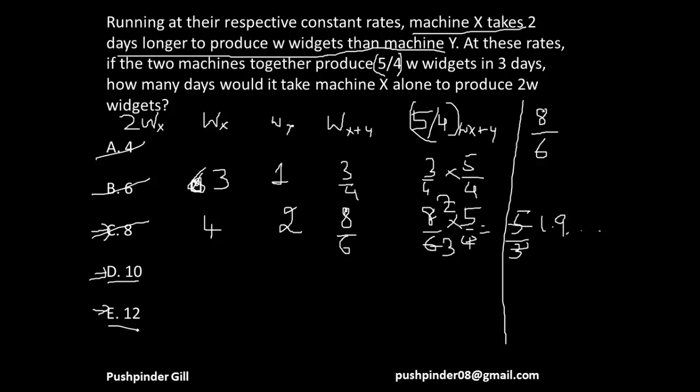So going with 12, to produce 2W widgets it takes 12 days. To produce half the units is gonna take 6 days. To produce W widgets, the Y machine is gonna take 2 days less, so 4 days. So together they're gonna take 24 divided by 10 days, and to produce 5/4 widgets they're gonna take 24/10 times 5/4. This goes like this and I get my answer to be 3, which is nothing but what the question is telling me.